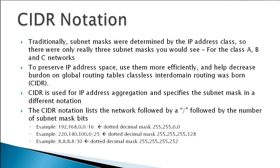With CIDR, they came up with a new notation: the network address followed by a slash, followed by the number of subnet mask bits. For example, 192.168.0.0/16 means we have 16 bits for our subnet mask, which comes out to 255.255.0.0. Another example: a /25 mask means we have 25 bits for the subnet mask, which converts to 255.255.255.128.